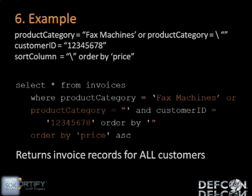However, if some untrusted data comes in and the product category is set to something like 'fax machines OR product_category = \'' and the sort column is set to '\' ORDER BY price', then your query looks very different. If you stare at it long enough, you'll see that we were able to get around the check against the customer ID, which means you see invoice records for all customers rather than just the one customer with that specific ID — which was the intent behind the code. The fix for SQL and query string injection is parameterized queries — make sure you use those, and don't simply concatenate untrusted data into a SQL query. Make it very clear which part of the query is the command and which part is the data — that's what parameterized queries do for you.